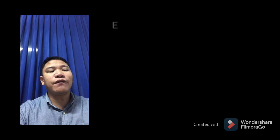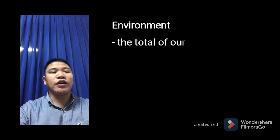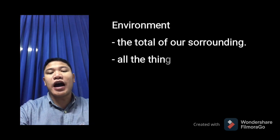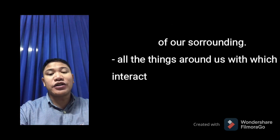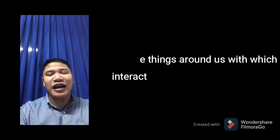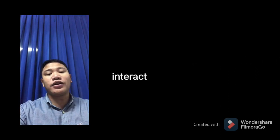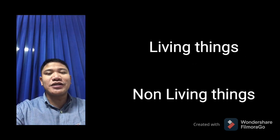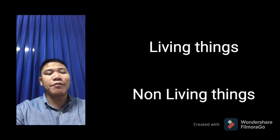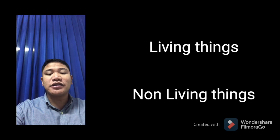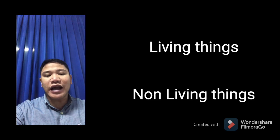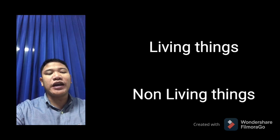So let's now define what is an environment. The environment is the total of our surroundings — all the things around us with which we interact. What are those considered living things? Living things are animals, plants, forests, fungi, bacteria, and viruses around us.